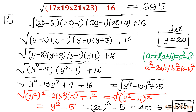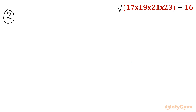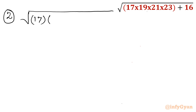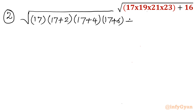The second approach is conventional — I am not going to put anything extra. I will write the expression under the square root with 17 as it is, 19 as 17 plus 2, 21 as 17 plus 4, and 23 as 17 plus 6, plus 16.